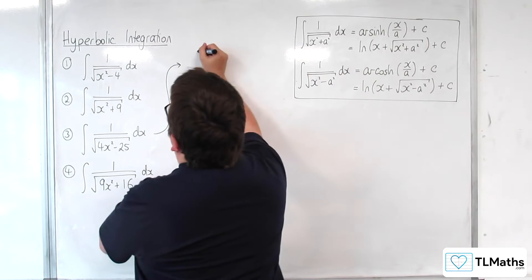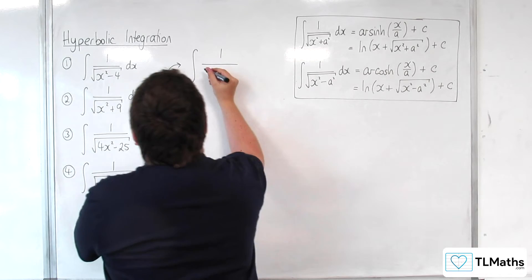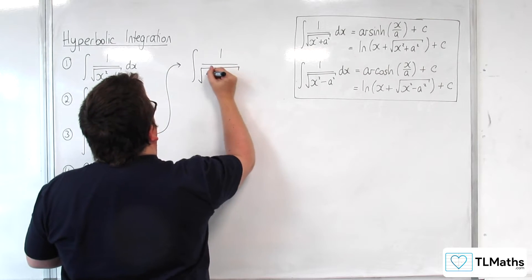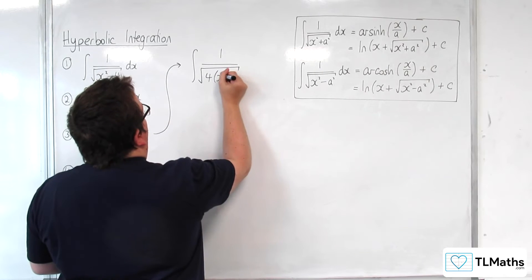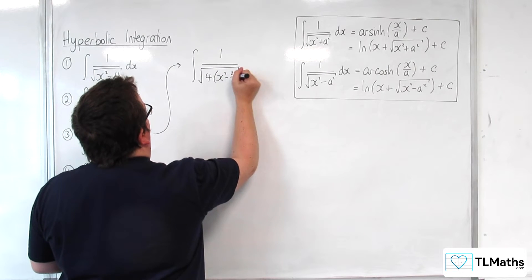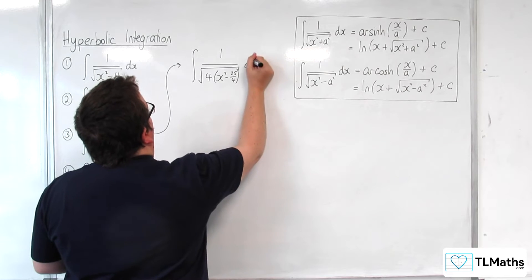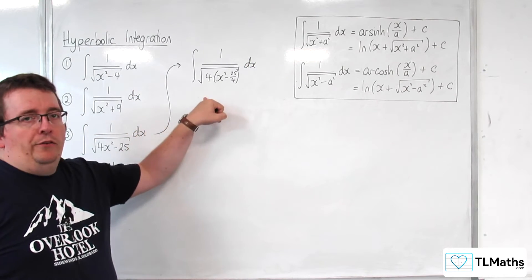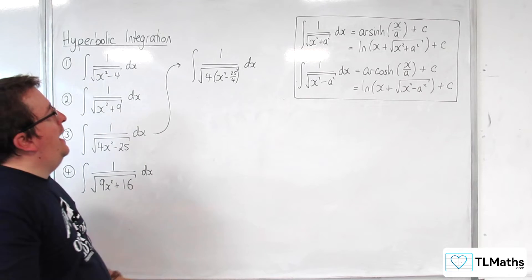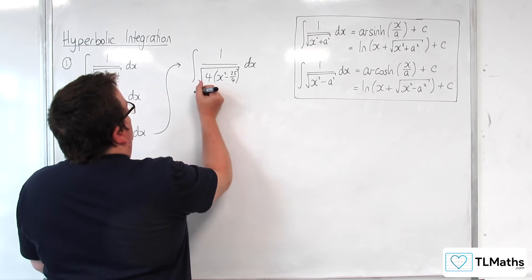So I'm going to write this as the integral of 1 over, now I'm going to factor the 4 out of the two terms inside the square root. So x squared take away 25 quarters dx. I can then factor the 4 out of the square root and have that as 2.